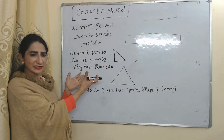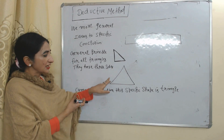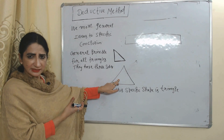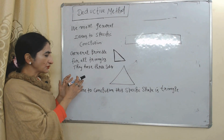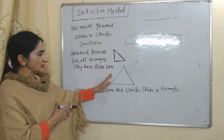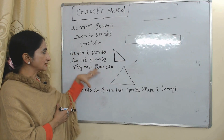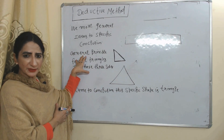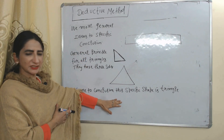This shape will have three sides, so I came to the conclusion this specific shape is a triangle. Here you can see, based on a general principle, I came to a specific conclusion. So this is called the deductive method.